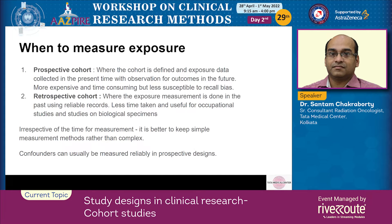In a prospective cohort, exposure measurement is done over a period of time because it is less susceptible to recall bias, although it is more expensive and time-consuming. In a retrospective cohort, exposure measurement is done using reliable records from the past. It is extremely important that measurement of exposure be done in a reproducible manner. Confounders can usually be measured reliably in a prospective design.